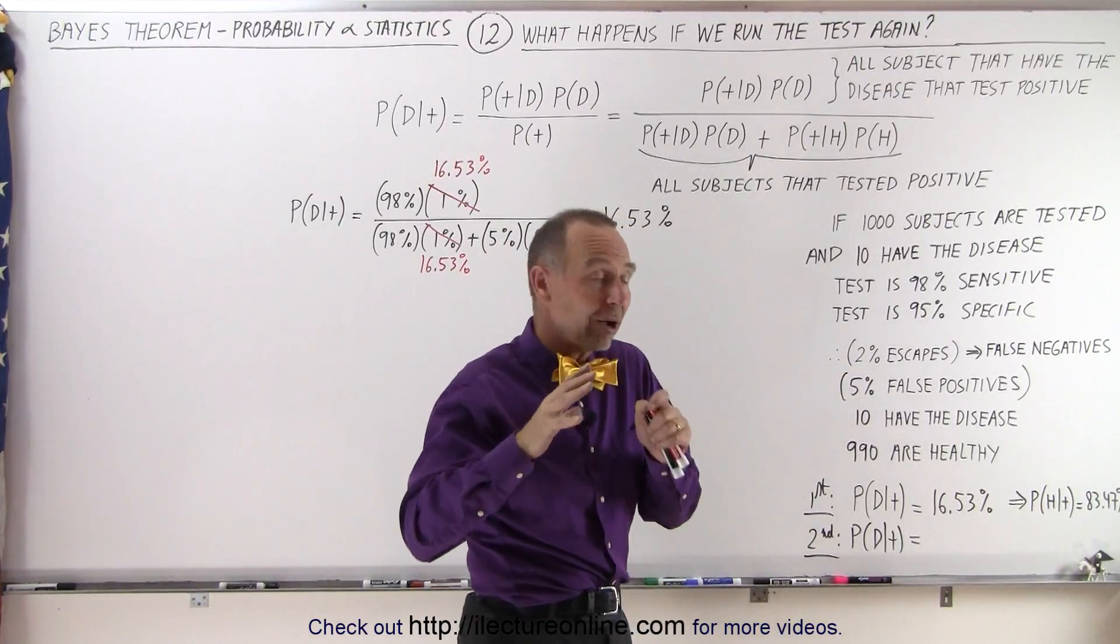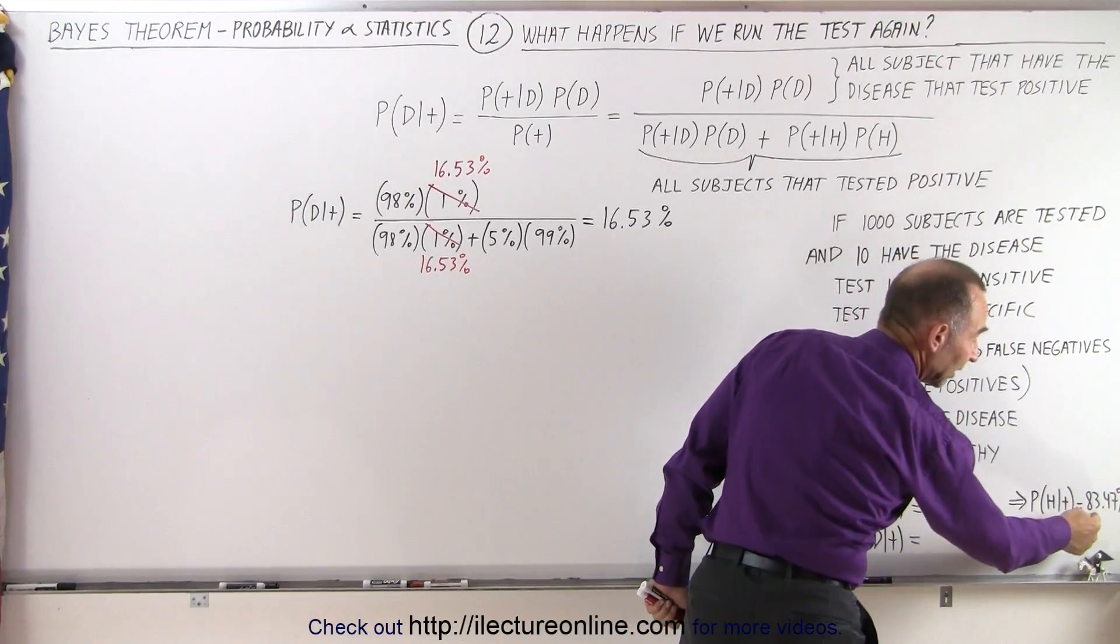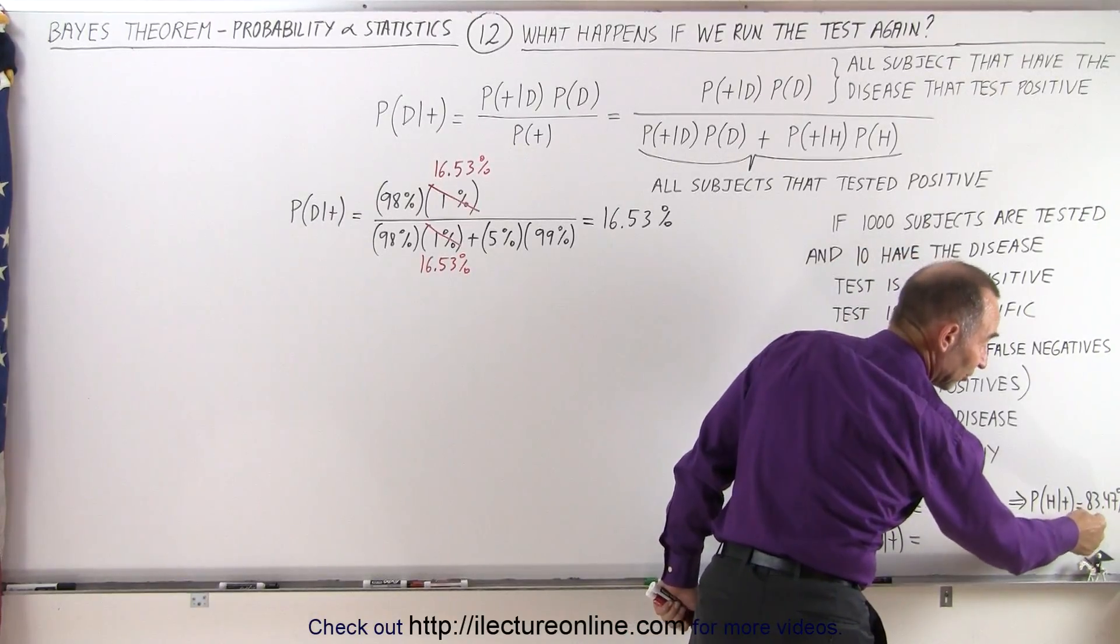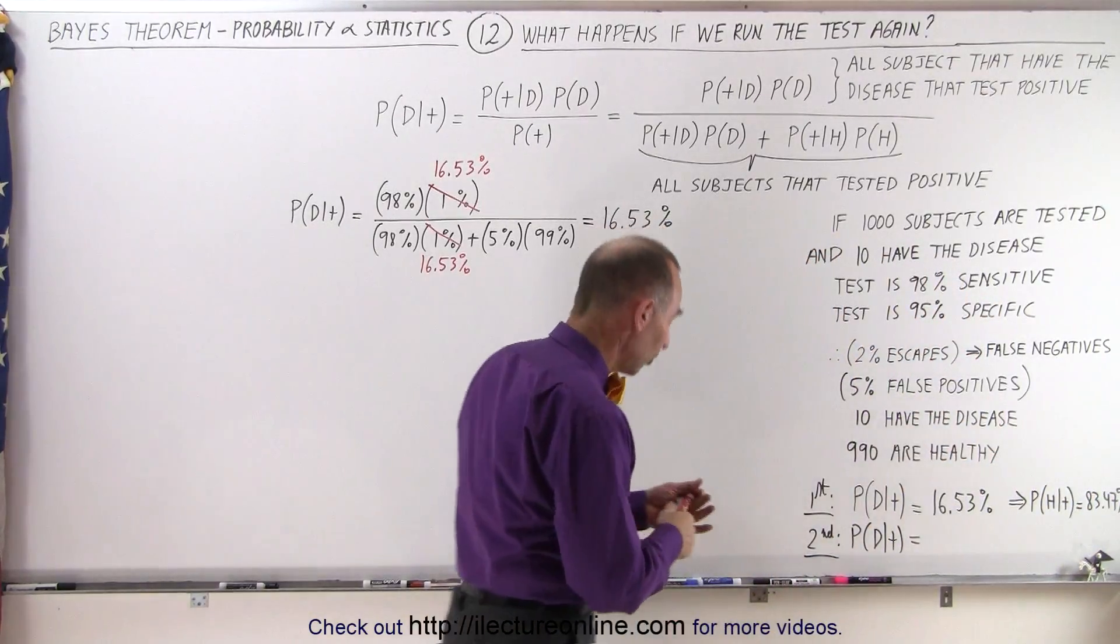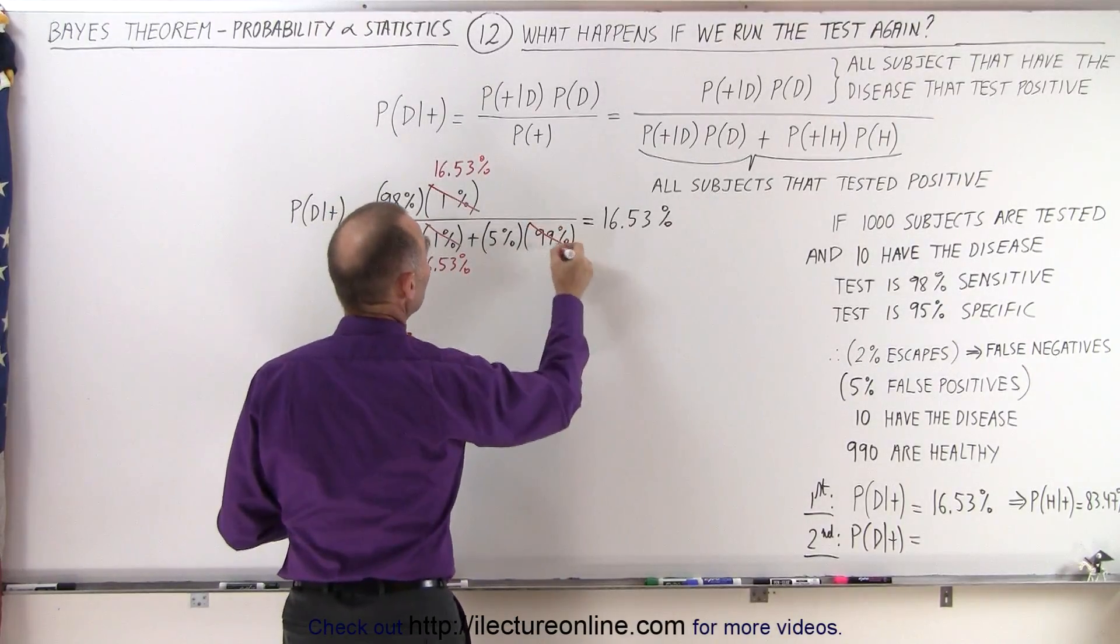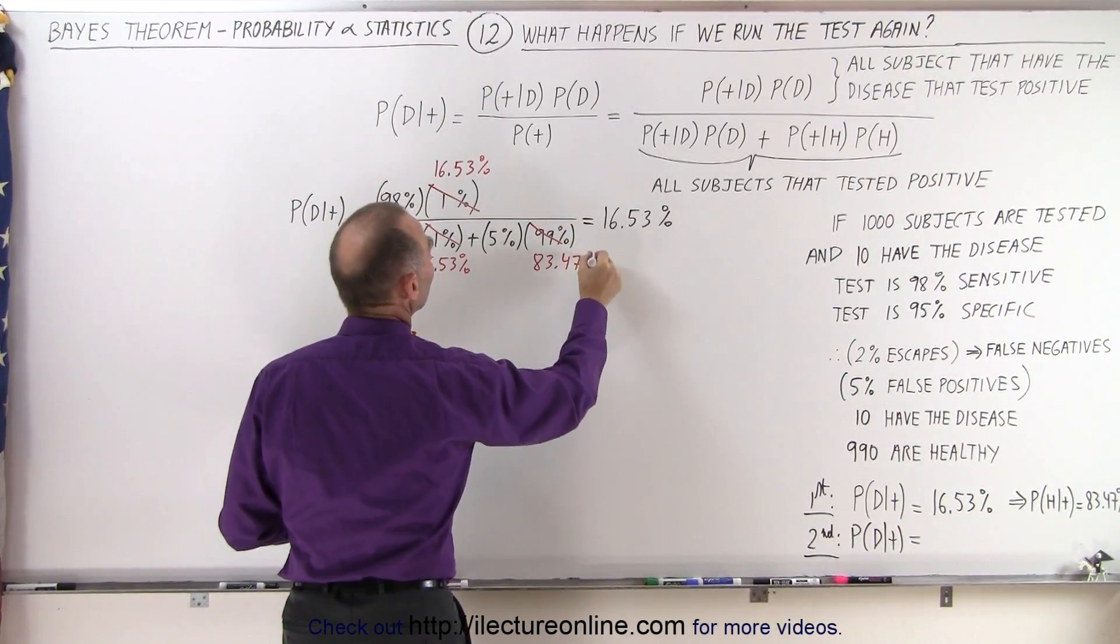since you've only taken those that have tested positive, now you know the probability of being healthy if you tested positive the first time is now only 83.47%. So this now changes to 83.47%.